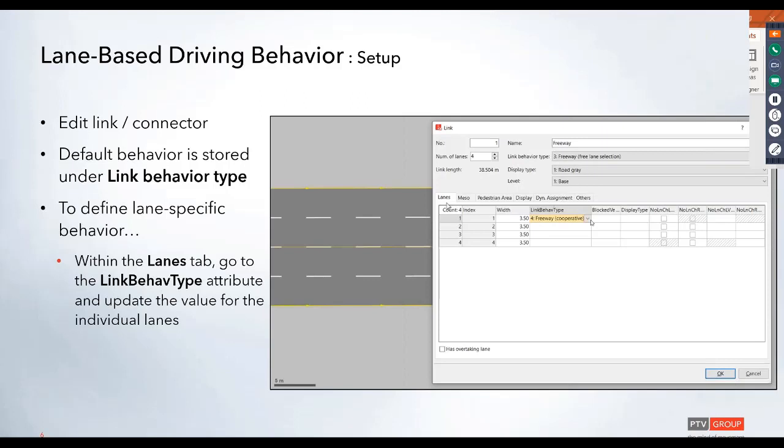Under the lanes themselves, in this lane tab, there's a new attribute called link behavior type down here.